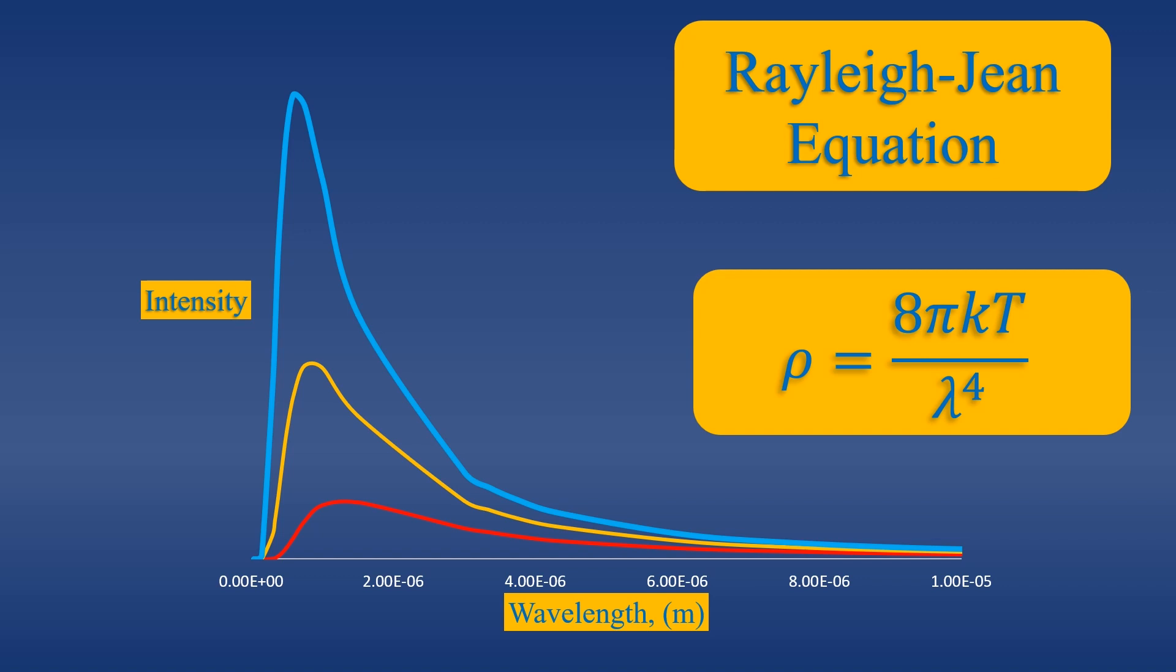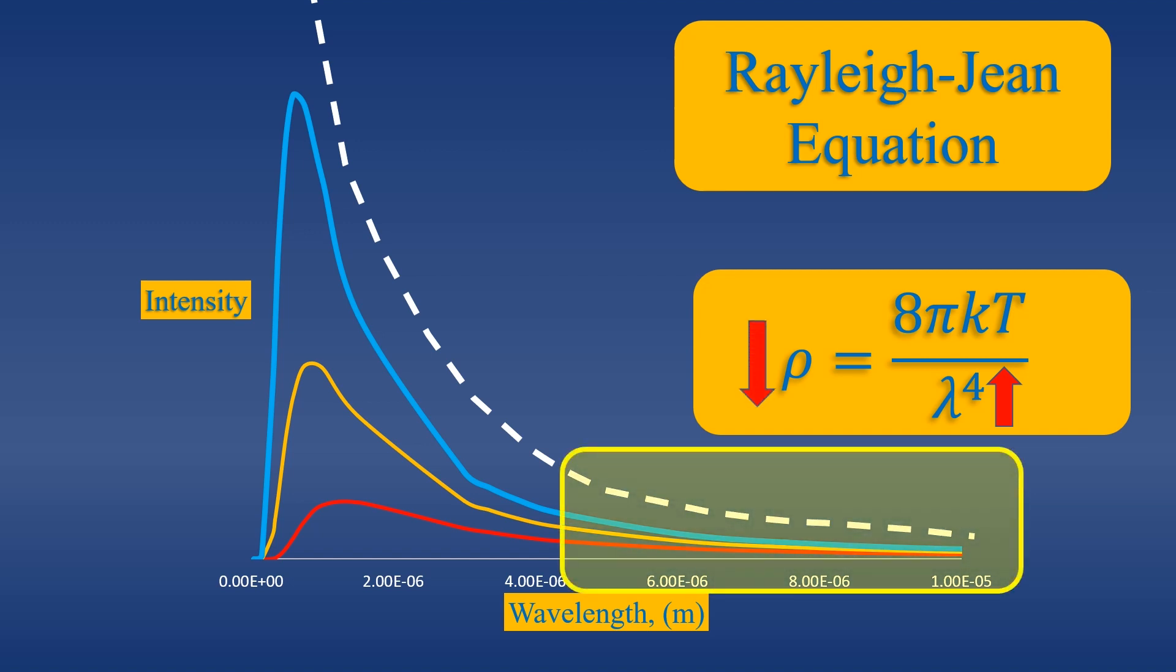Here, k is Boltzmann's constant from thermodynamics. A plot of the intensity versus wavelength shows a curve like this. Notice, as the wavelength increases, the intensity decreases, which agrees with experiments at high wavelengths.